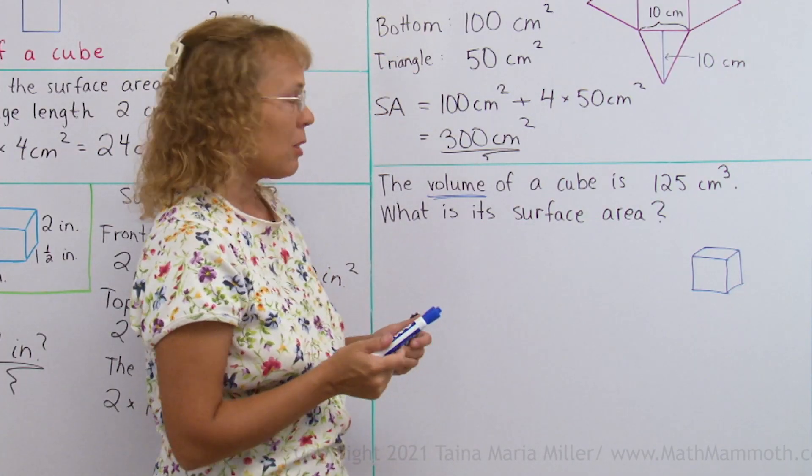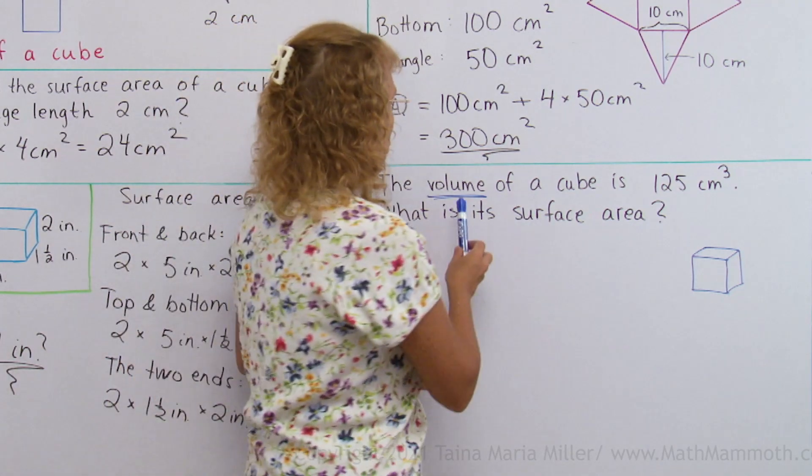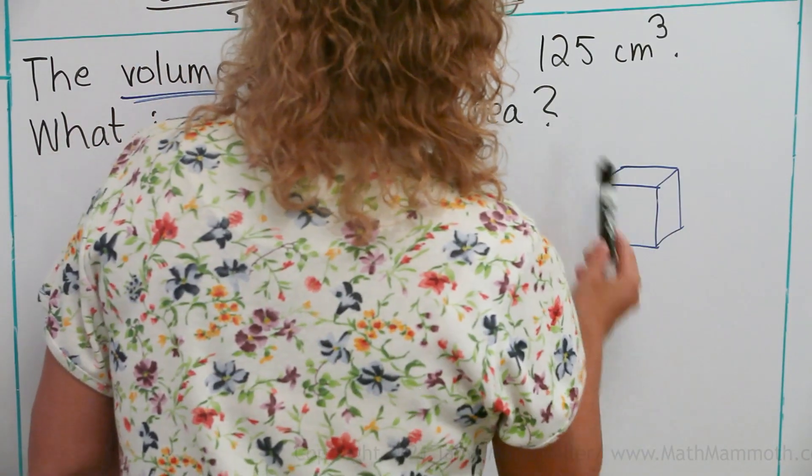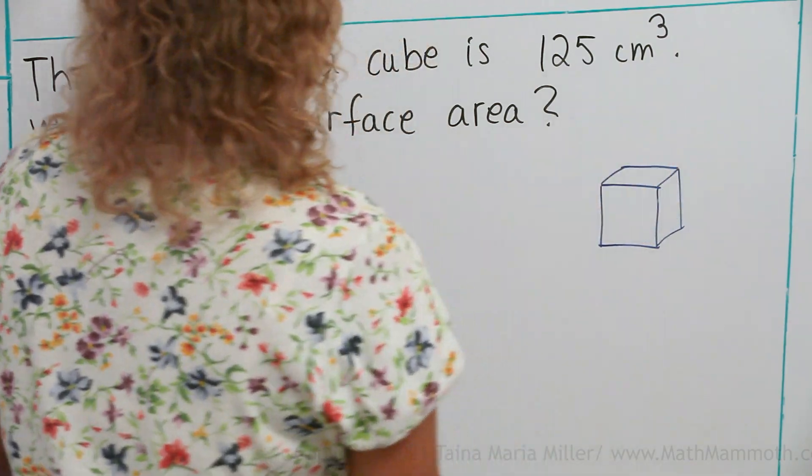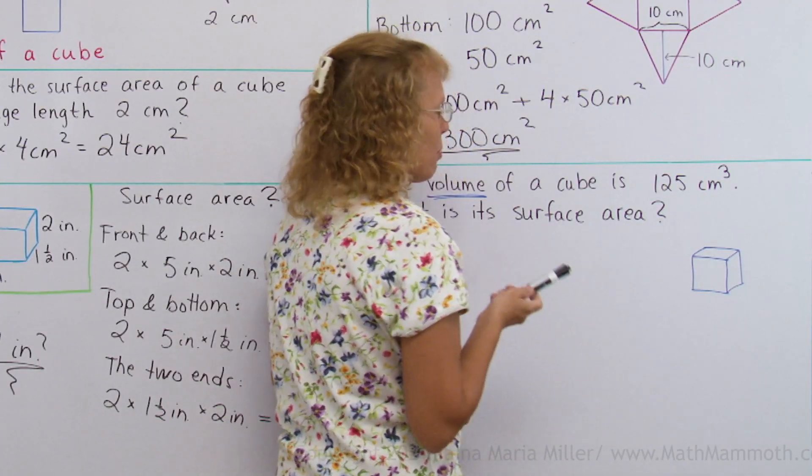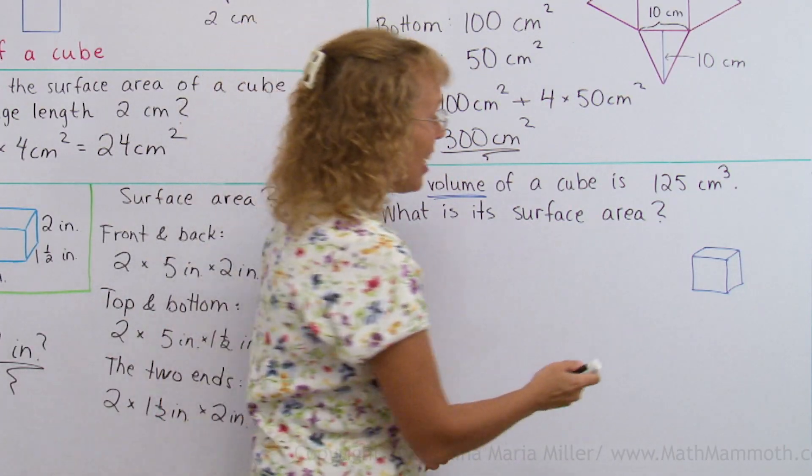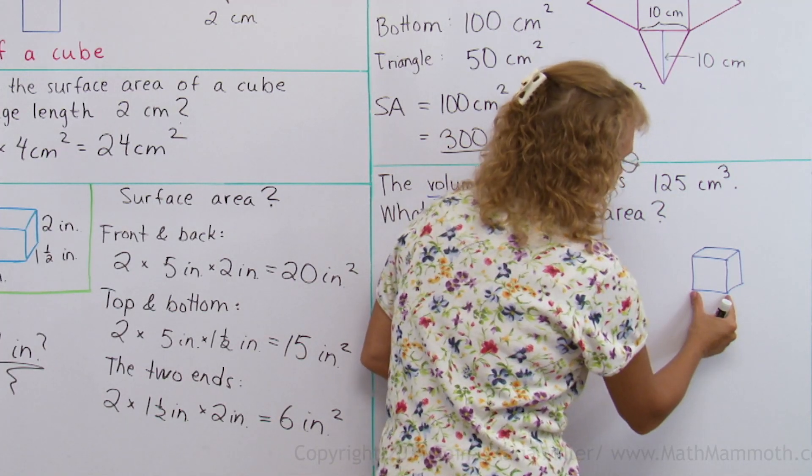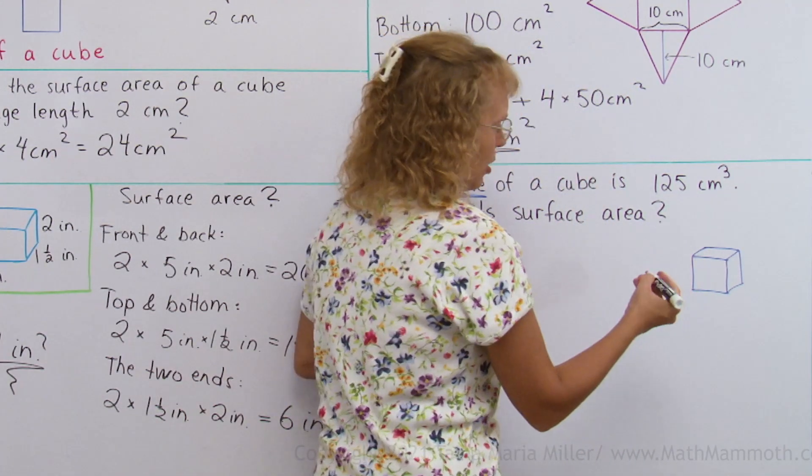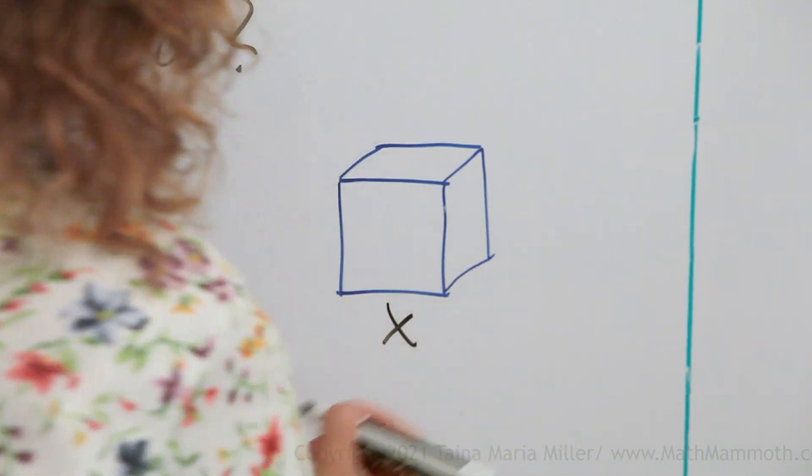What do we know and what do we not know? We know the volume of the cube. The volume of this is 125 cubic centimeters and what we don't know, but we would like to know, is how long is this, the edge of the cube. So let me mark it with an unknown. We want to know that.